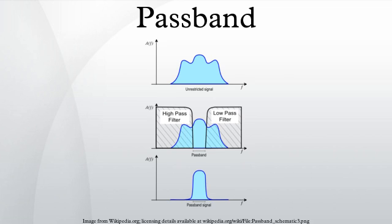A passband is the range of frequencies or wavelengths that can pass through a filter. A bandpass filtered signal is known as a bandpass signal, contrary to a baseband signal.